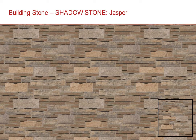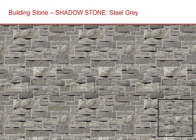Shadow stone textures have shadow lines added to the image to create the illusion of depth. Some designers who are inserting the texture maps into their models for rendering may not want the shadows shown, as they will be rendering their own shadows afterward. If this is the case, a custom texture map could be requested without the shadow lines.